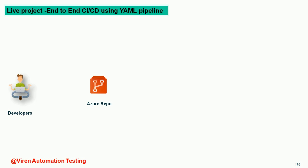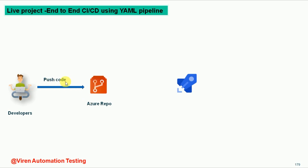They can use multiple cloud-based source code management tools like GitHub, Bitbucket, and the Azure Repository. For our project I am going to use the Azure Repository. Azure Repository is a service provided by Azure DevOps, and this is the part of Azure DevOps where we keep our source code as a repository. Once the developer is done with the code, they push the code to the Azure Repository.